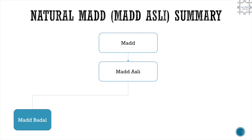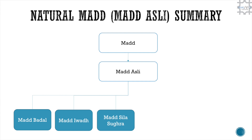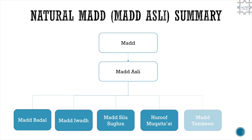The five branches are: 1. Mad badal. 2. Mad iwad. 3. Mad sila sugra. 4. Huruf muqatta'at. And 5. Mad tamkeen.